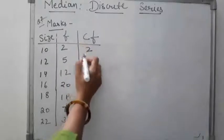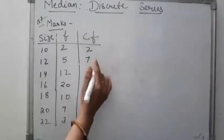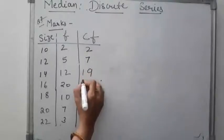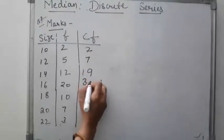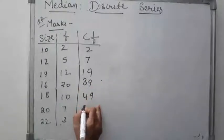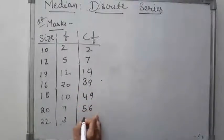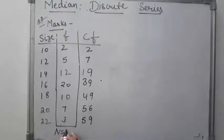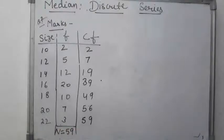The cumulative frequencies are: 2, 7, 19, 39, 49, 56, 59. So our N, which is the summation of f, is 59.